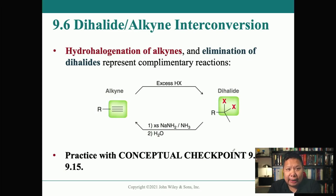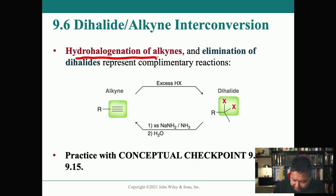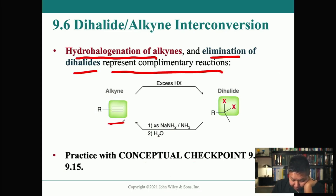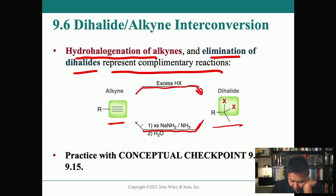Hydrohalogenation of alkenes and elimination of dihalides are complementary reactions. You can go from an alkyne, treat it with excess halide to get a dihalide, then reverse the reaction by treating that dihalide with excess sodium amide, ammonia, and water to get back to the alkyne.